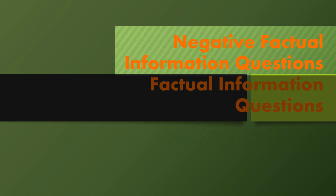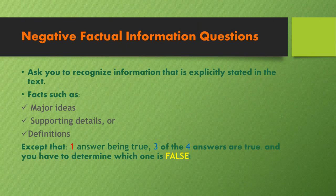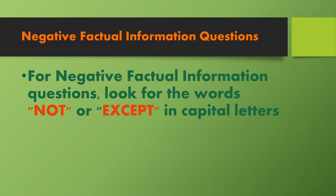First, we will show you Negative Factual Information Questions. These questions ask you to recognize information that is explicitly stated in the text. This may include facts such as major ideas, supporting details, or definitions, except that instead of only one answer being true, three of the four answers are true, and you have to determine which one is false. For Negative Factual Information Questions, look for the words NOT or EXCEPT in capital letters.